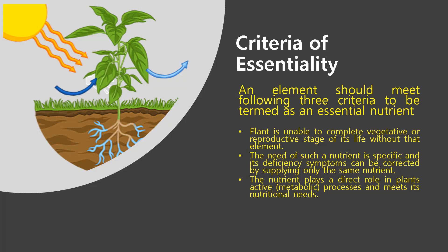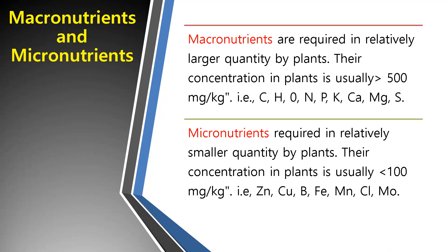Essential nutrients can be distinguished into macro and micronutrients depending upon their requirements. Macronutrients are required in relatively larger quantities by plants — their concentration in plants is usually more than 500 mg/kg. These are: carbon, hydrogen, oxygen, nitrogen, phosphorus, potassium, calcium, magnesium, and sulfur. Macronutrients are further categorized into primary and secondary nutrients. From a management perspective, the primary nutrients are nitrogen, phosphorus, and potassium, because they are most often limiting from a crop production standpoint. Calcium, magnesium, and sulfur are secondary nutrients because they are rarely limiting and seldom added to soils as fertilizers.